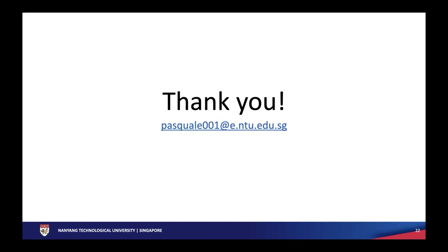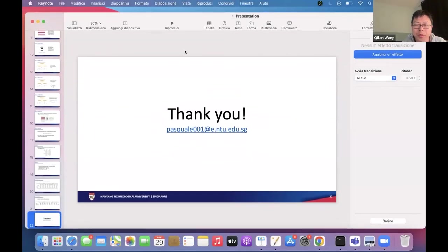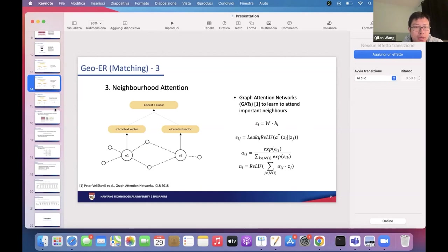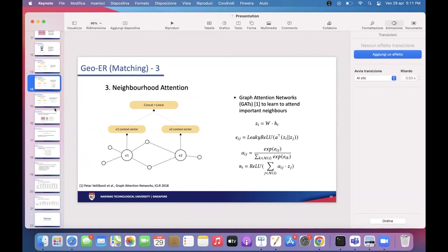That's it for my presentation. If you have any questions, I'm happy to answer. Thanks for the speaker. Is there any question? I just want to have one quick question — you are using the graph attention network. Have you tried any other GNN method to aggregate this kind of information? No, not really. The idea was to use graph attention from the beginning, because not every neighbor has the same importance, so we really focused on paying different attention to different neighbors.